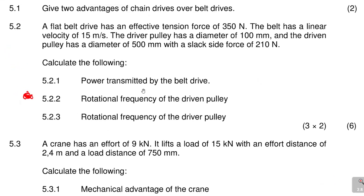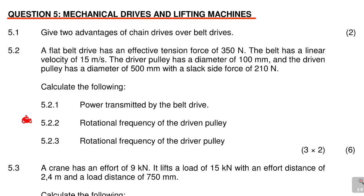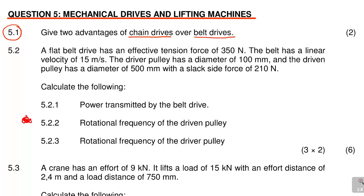Let us look at a question that deals with mechanical drives — this is question 5 in Engineering Science N2, taken from a previous exam paper. Question 5.1 says: give two advantages of chain drives over belt drives. It is very important to know such theory because these questions can give you good marks.